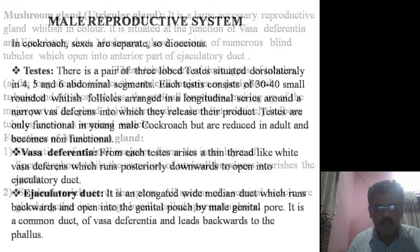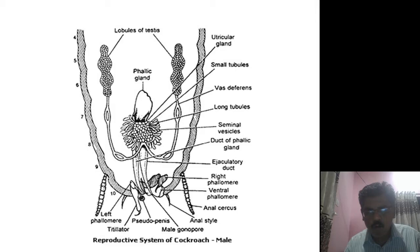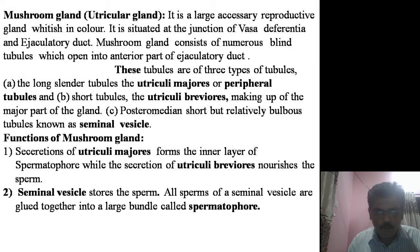The two important accessory glands present in the male reproductive system of cockroach are: one is the utricular gland, also called as the mushroom gland, and the other gland is called the phallic gland, also called as the conglomerate gland.